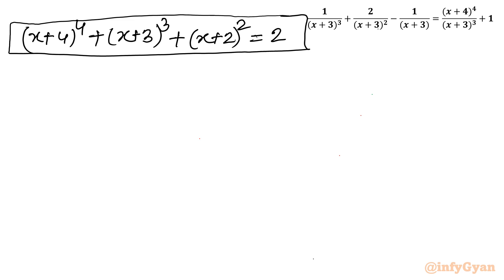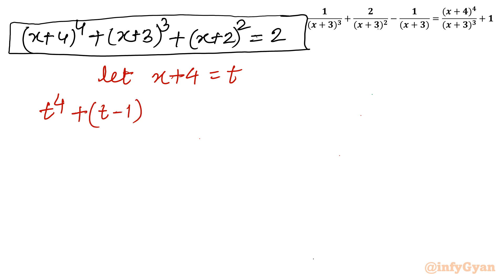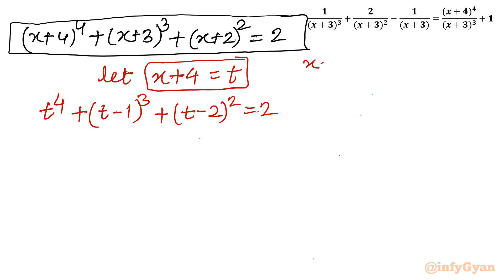We will solve using substitution. Let x+4 equal t. Then x+3 equals t minus 1, and x+2 equals t minus 2. Substituting, the equation becomes t⁴ plus (t−1)³ plus (t−2)² equal to 2. We now have a quartic in t.